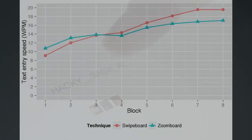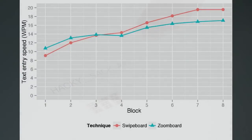Our study showed that with less than two hours training, Swipeboard users achieved 19.58 words per minute, 15% faster than an existing baseline technique.